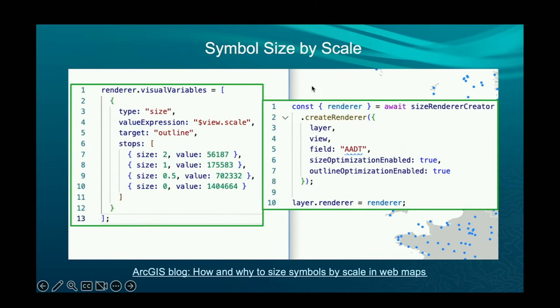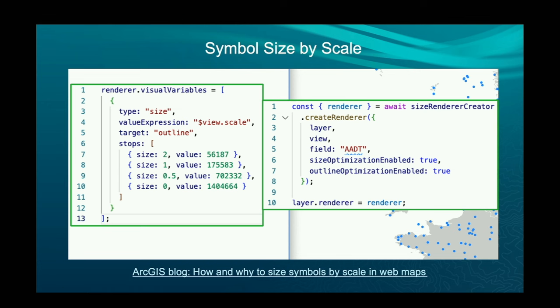If you want to do it by hand, you set a size visual variable and point to the scale, as shown. You can also target an outline for polygons, varying polygon outline width by scale by setting the target to outline. But really the nice way is to set the size optimization or outline optimization parameter to true in smart mapping, or just let the map viewer do it for you.